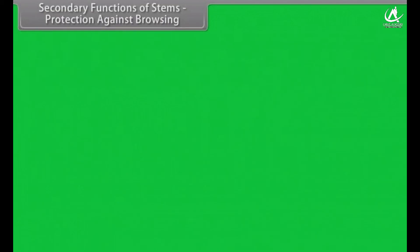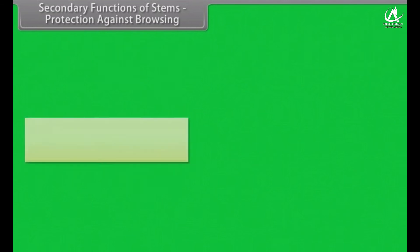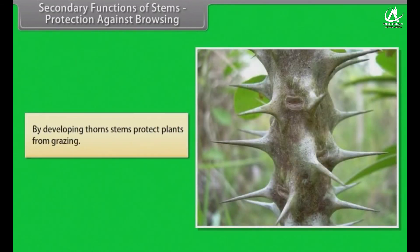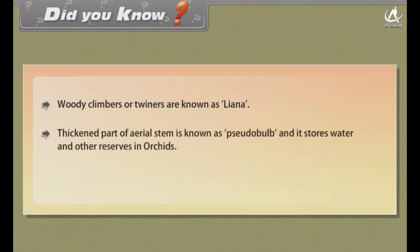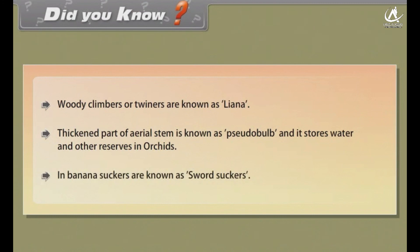By developing thorns, stems protect plants from grazing. Woody climbers or twiners are known as lianas. The thickened part of an aerial stem is known as a pseudobulb, and it stores water and other reserves. In banana, suckers are known as sword suckers.